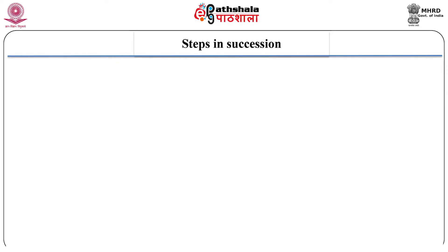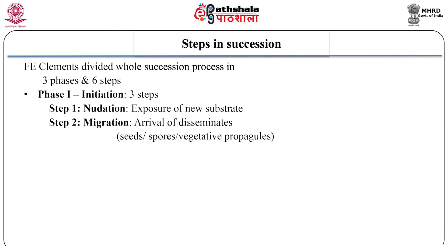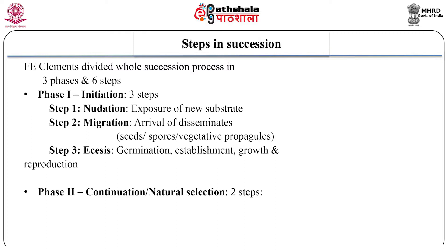Steps in succession: Clemens in 1916 divided the whole succession process into 3 phases and 6 steps. Phase 1 is the initiation phase, which involves 3 steps. Step 1 is nudation — the exposure of a new substrate. Step 2 is migration — the arrival of disseminules, that is the seeds, spores or vegetative propagules. Step 3 is ecesis — referring to germination, establishment, growth and reproduction of propagules. Phase 2 is that of continuation or natural selection.